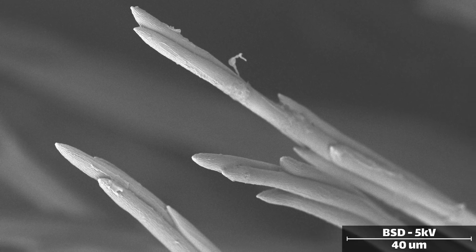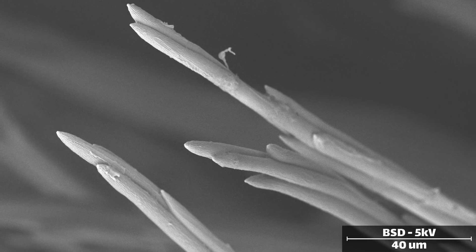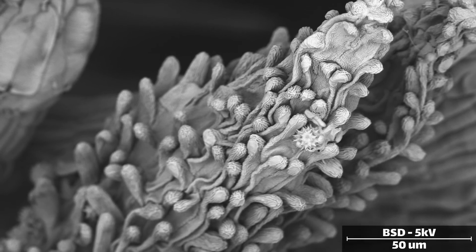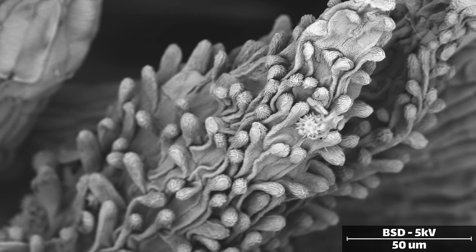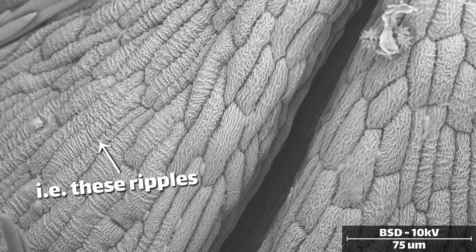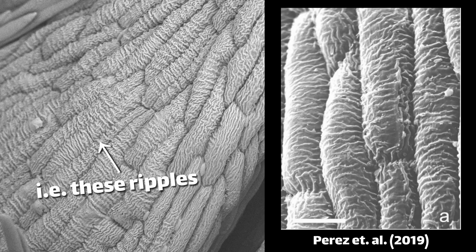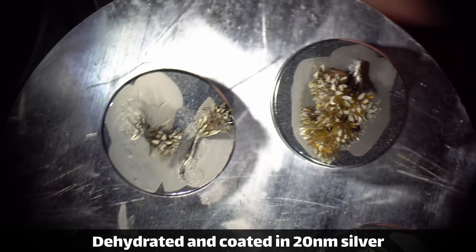Now might be a good time to talk about artifacts in scanning electron micrographs. In many of the images seen today, there's a deflated or crumpled look to the various parts of the plant. While this might be an accurate depiction of some structures, like the backside of the petals, which as far as I can tell really do look like this, other areas are definitely unintentional artifacts.